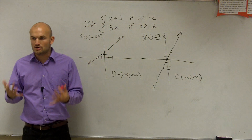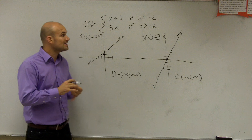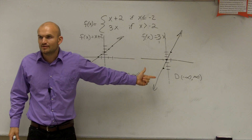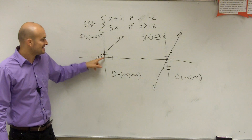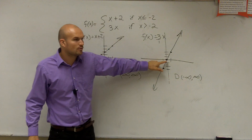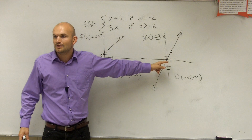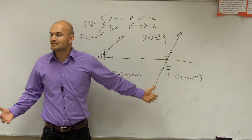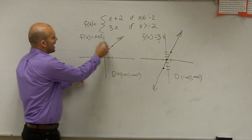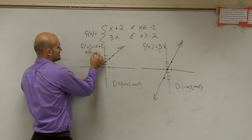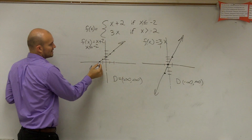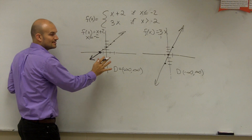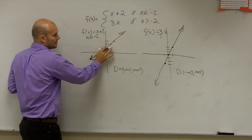So ladies and gentlemen, a piecewise function — what we're going to do is combine these two graphs, but you can't put them on top of each other. Otherwise we won't have a function anymore. Look at x = 0: I have a y value of 2 from the first function, and a y value of 0 from the second. So I have two different y values when x equals 0 — that's not a function. So I put constraints on them. Rather than having domain negative infinity to infinity, I only want to graph x + 2 when x is less than or equal to negative 2. Everything greater than negative 2 gets removed.